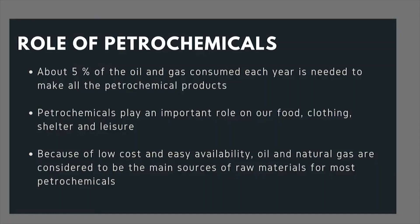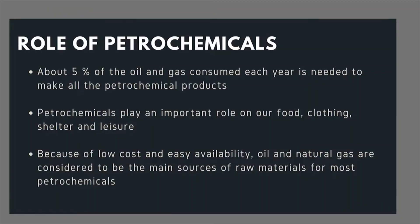Petrochemicals are chemicals made from petroleum and natural gas, and their role is immense in nation building. About 5 percent of the oil and gas consumed each year is needed to produce different kinds of petrochemical products. Petrochemicals play a vitally important role in our food, clothing, shelter and leisure — from morning till evening, we use products that contain petrochemical applications. Because of low cost and easy availability, oil and gas are considered the main sources of raw materials for most petrochemicals, though alternate sources also exist.